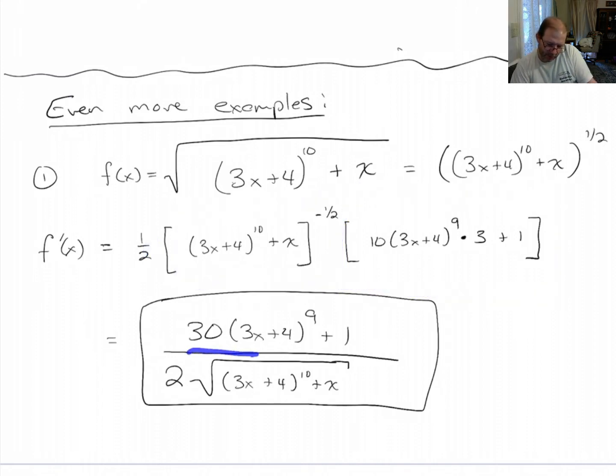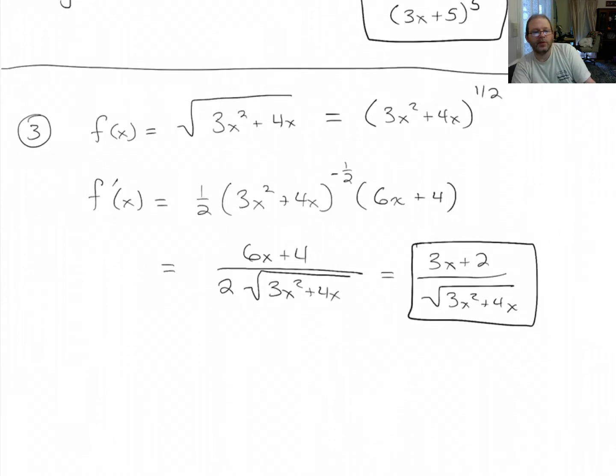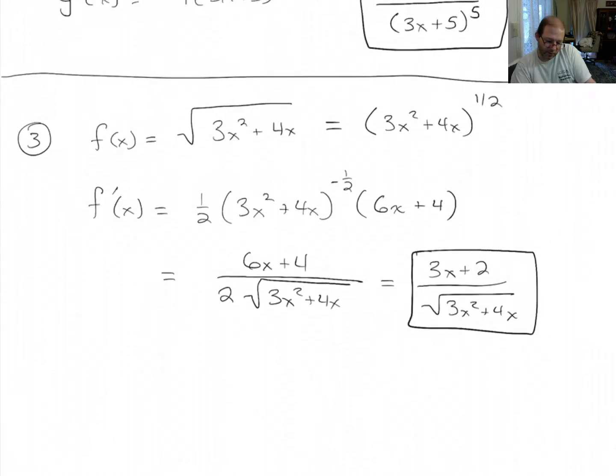You wind up with 2 times the original square root downstairs. Then this is the derivative of what's in the square root. Same thing happened here. What we've got down here is we've got that same radical here times 2. Then up top, we've got the derivative of what was inside.